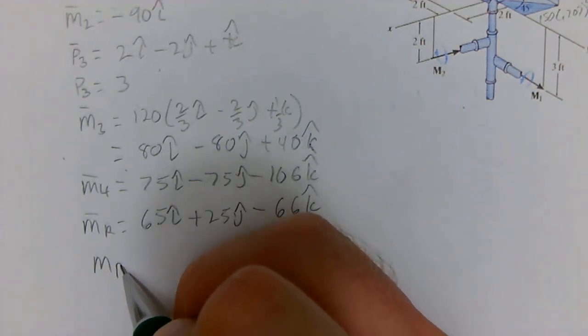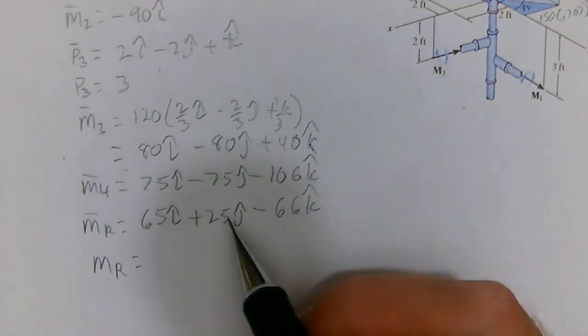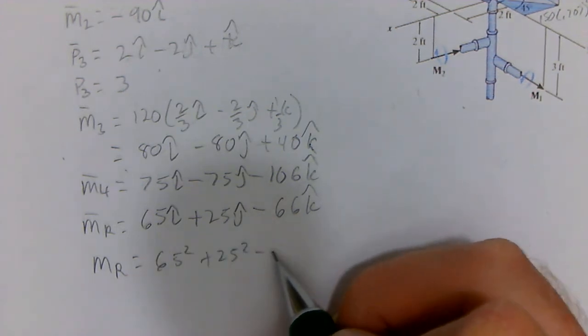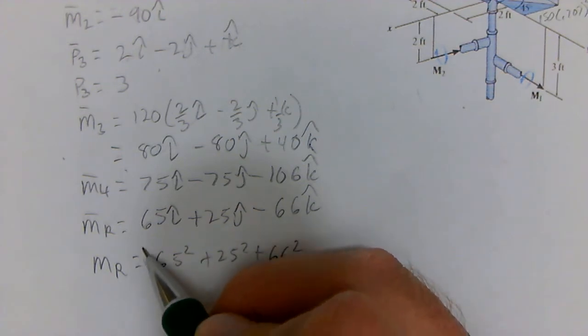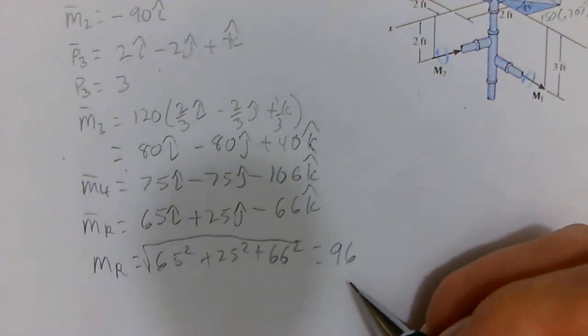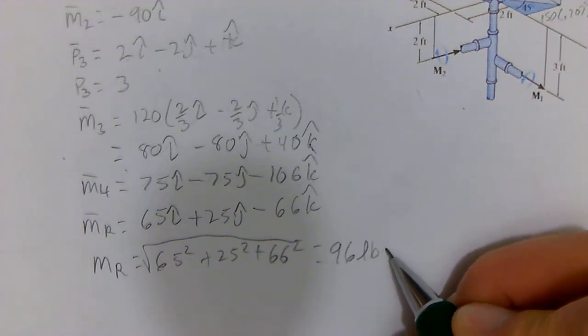The magnitude of the resultant is the square root of all those: 65 squared plus 25 squared plus 66 squared, and that equals 96. And we are in pound feet.